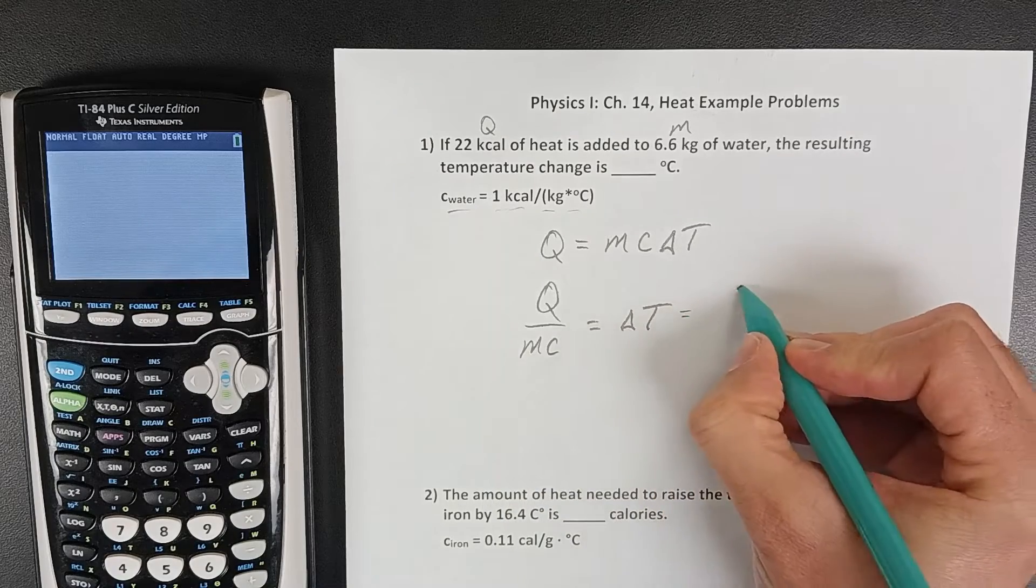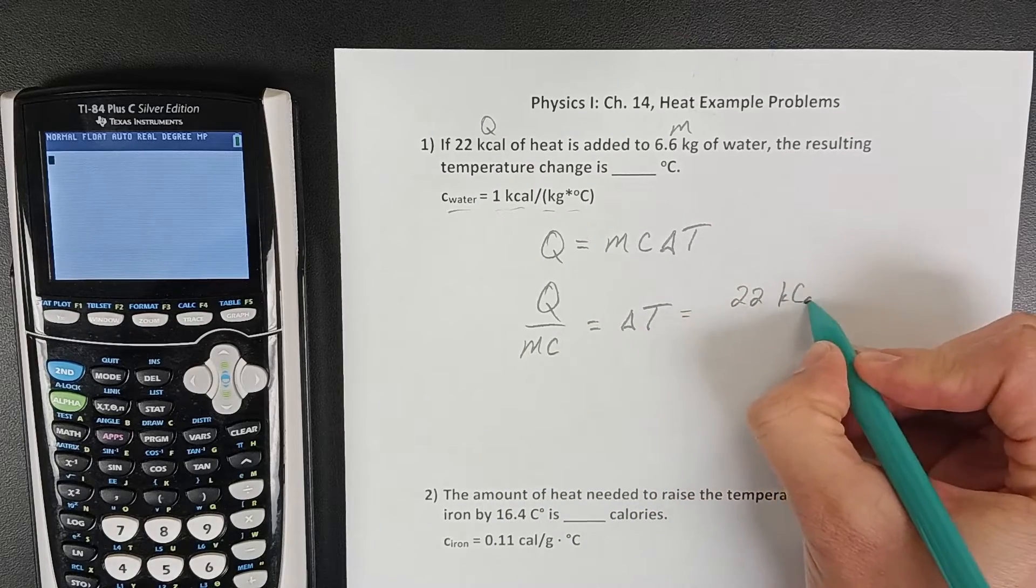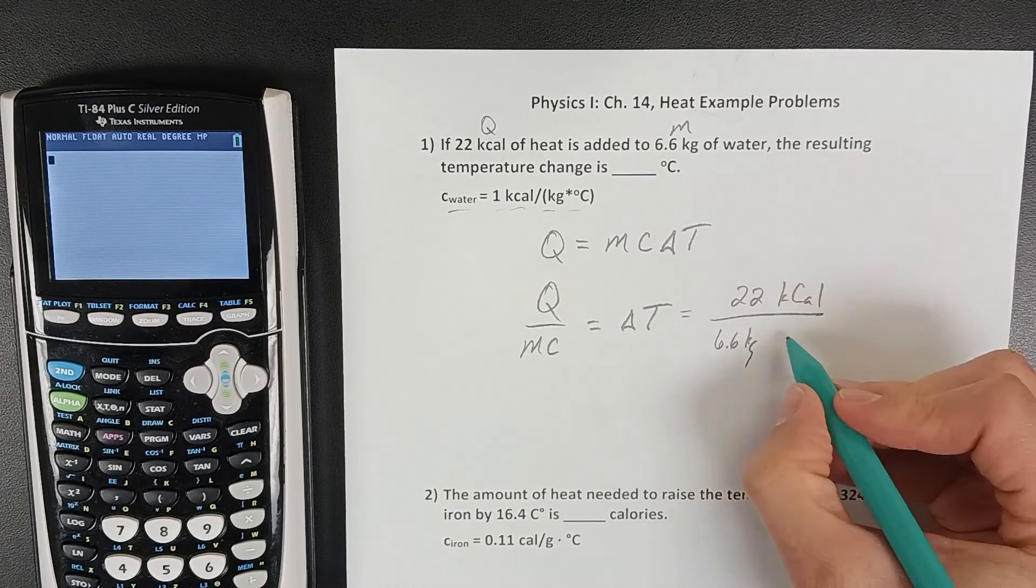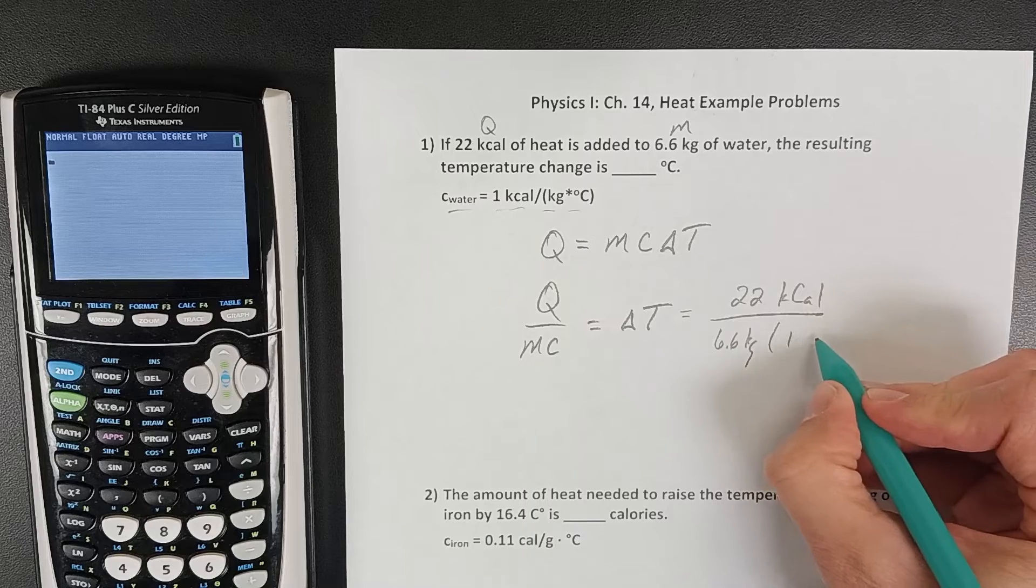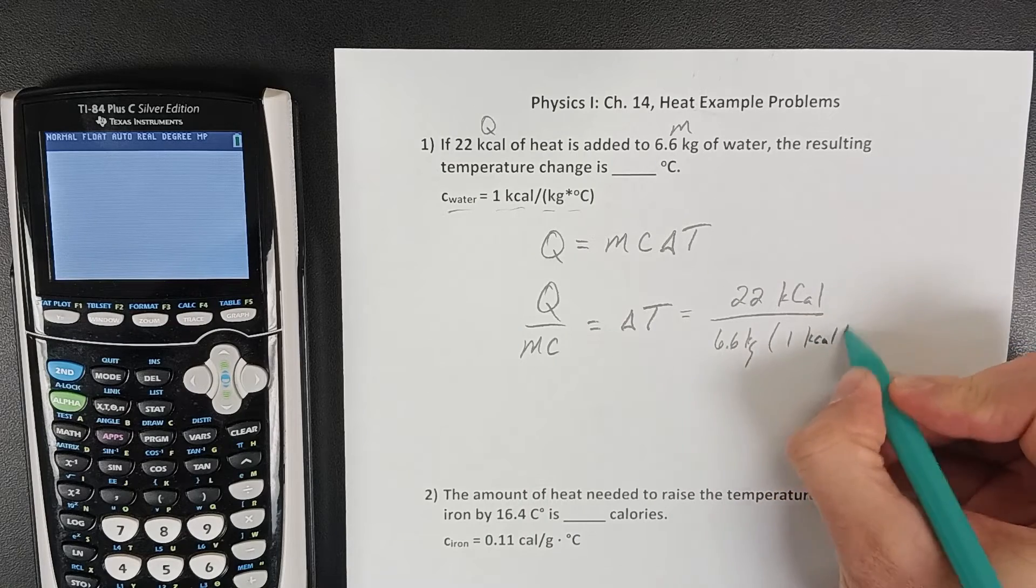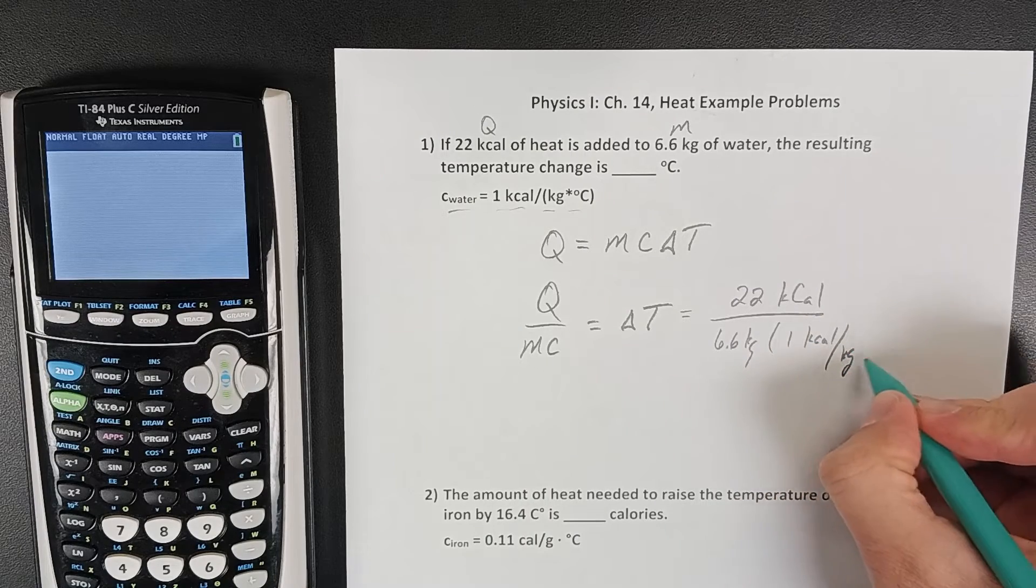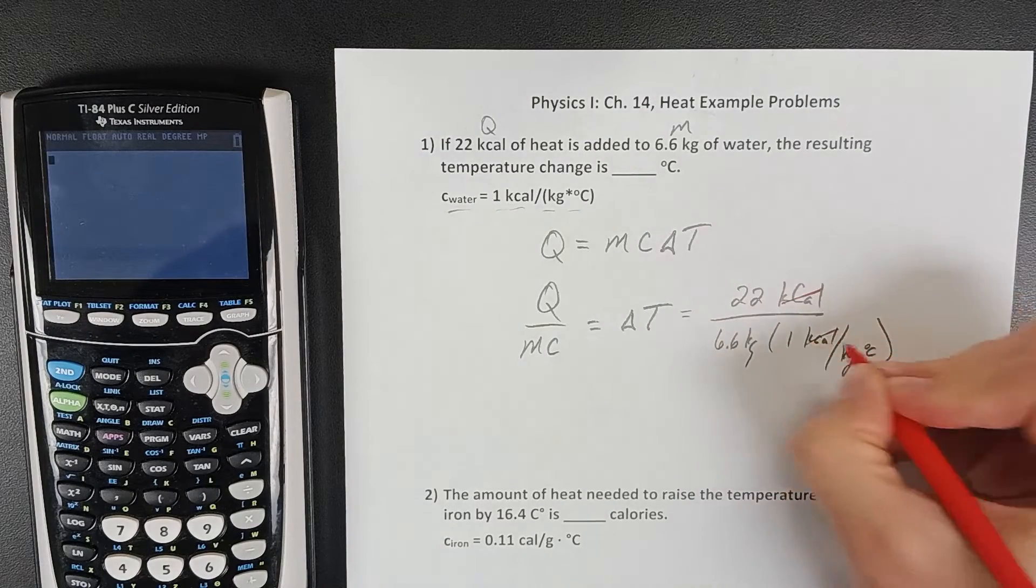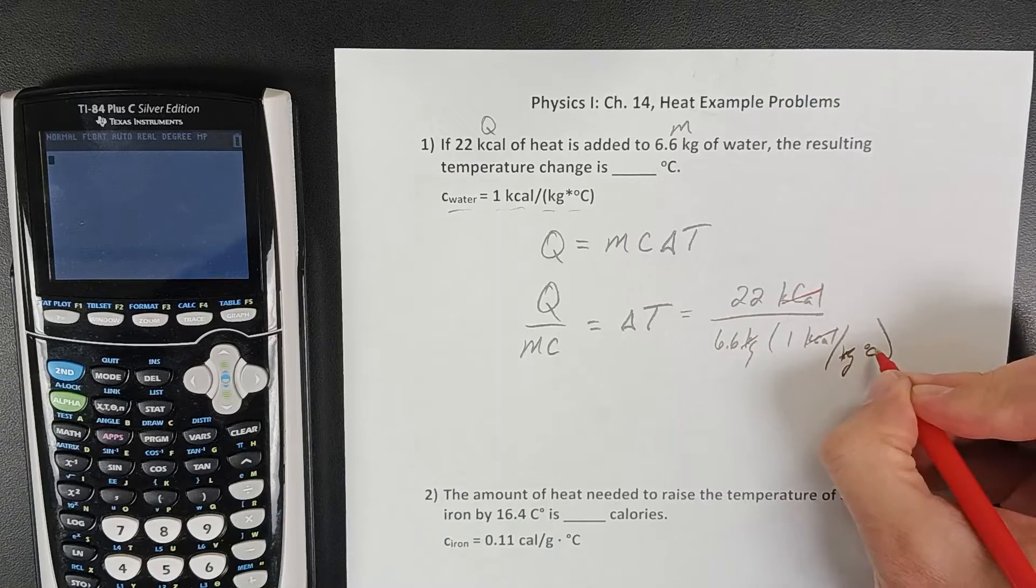If we take those 22 kilocalories divided by 6.6 kilograms of water and by 1 kilocalorie per kilogram degree Celsius, then our kilocalories are canceling and our kilograms are canceling.